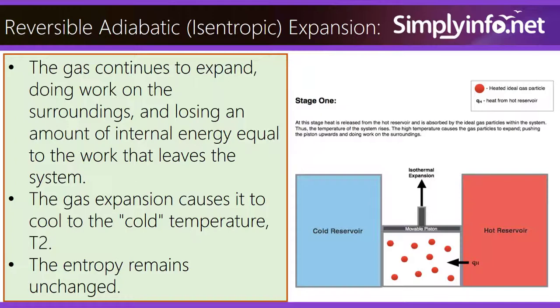The gas continues to expand, doing work on the surroundings and losing an amount of internal energy equal to the work that leaves the system. The gas expansion causes it to cool to the cold temperature T2. The entropy remains unchanged.